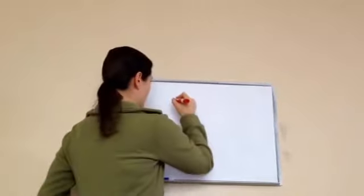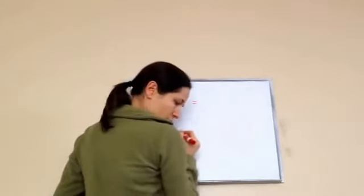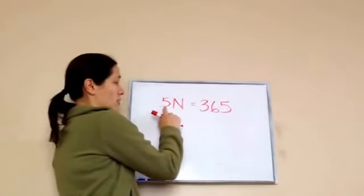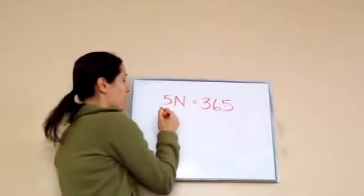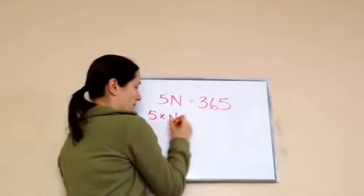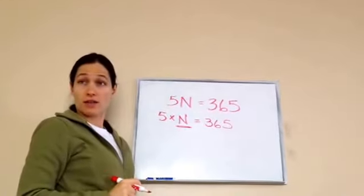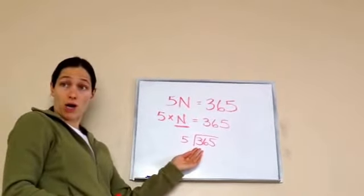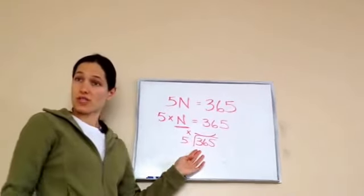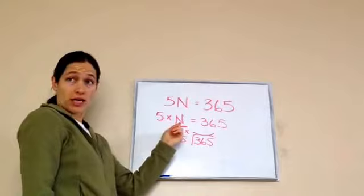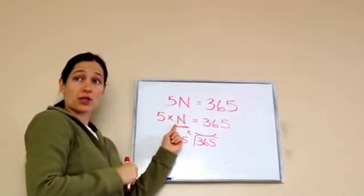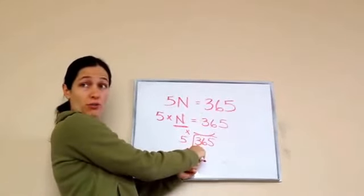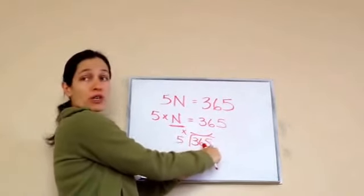The last thing I want to teach you is this. Sometimes they'll show you a problem that looks like this. Do you remember what I told you this means? Whenever you see a letter next to a number, it actually means to multiply. So here's what it's actually saying: 5 times what equals 365. If I'm missing a factor in multiplication, what do I do? I divide to get the answer. Because what I'm asking is 5 times what equals 365, and if I put it in a division form — 365 divided by 5 — I'm asking the same question.